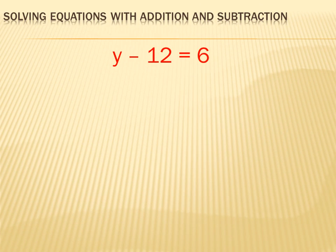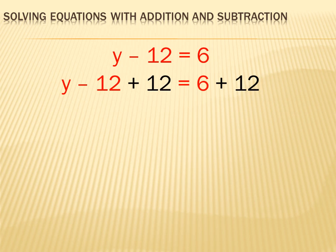Algebra's fun — it's just like a game. You've got to remember a couple of rules and then you solve problems and puzzles. Let's try this: y minus 12 equals 6. I want to solve for y, meaning I want to isolate y so it reads y equals something. To do that, I've got to get rid of minus 12. What's the opposite of subtracting 12? Adding 12. So I'm going to add 12 to the left side of the equation, and if I do that, I have to add 12 to the right side of the equation as well.